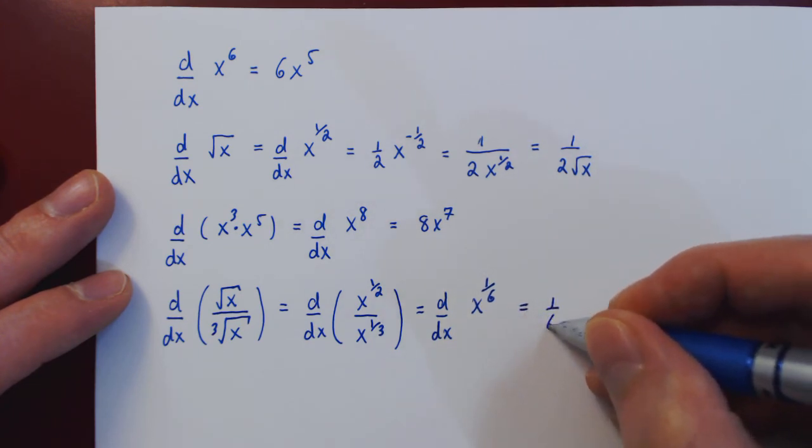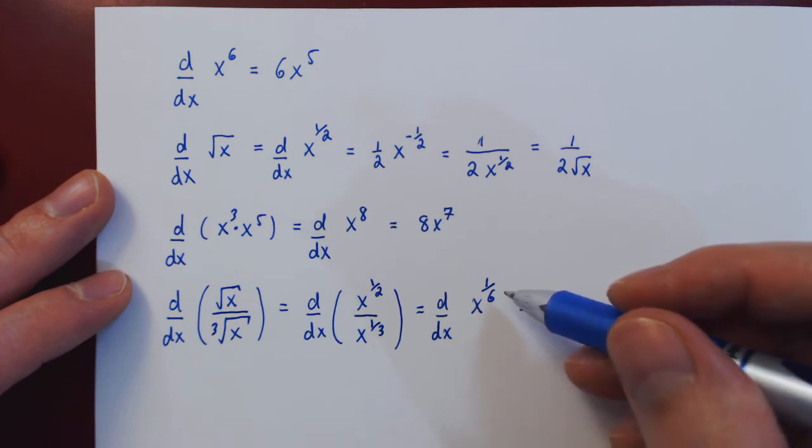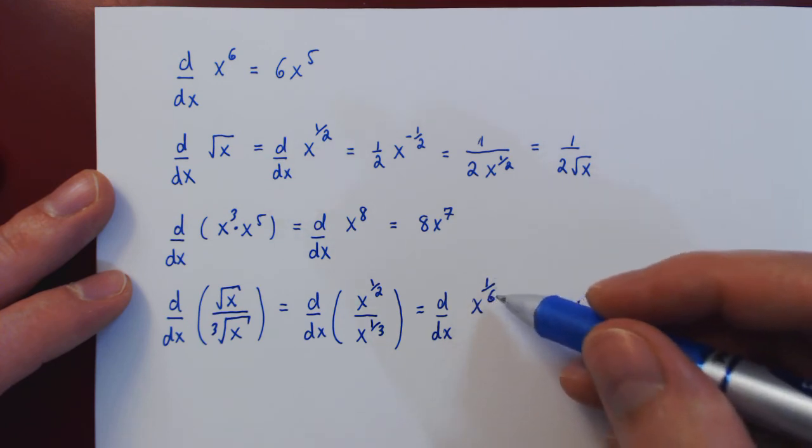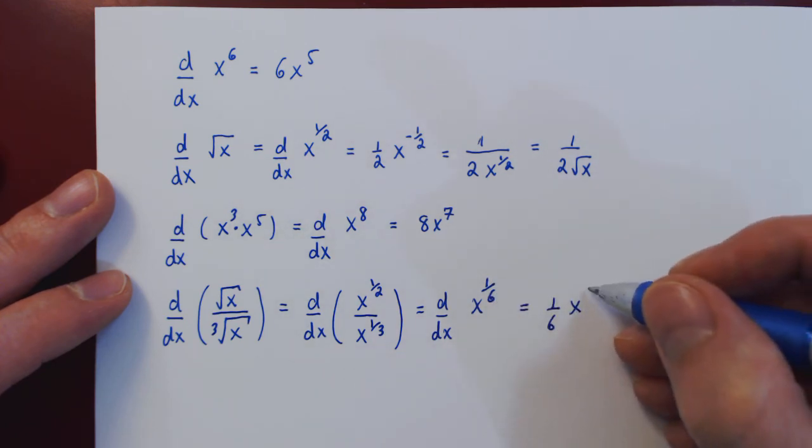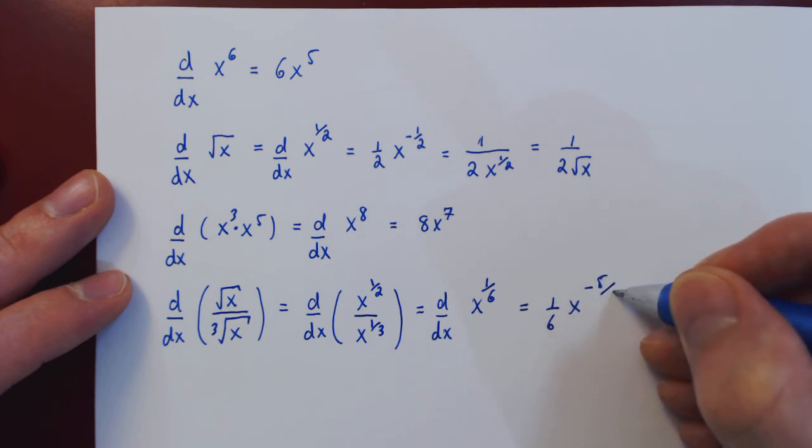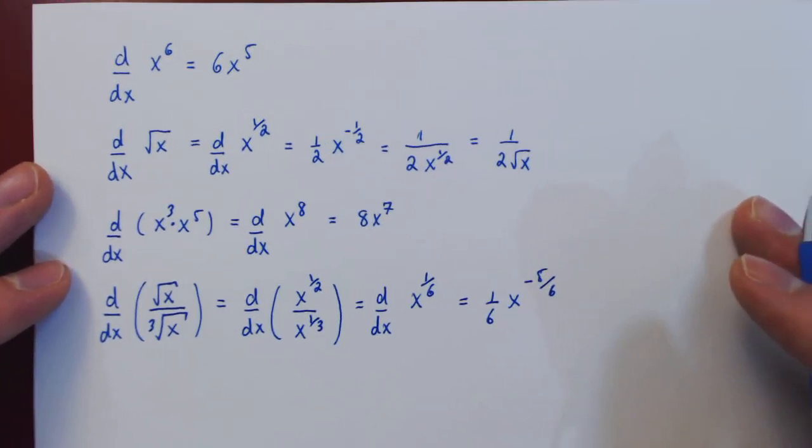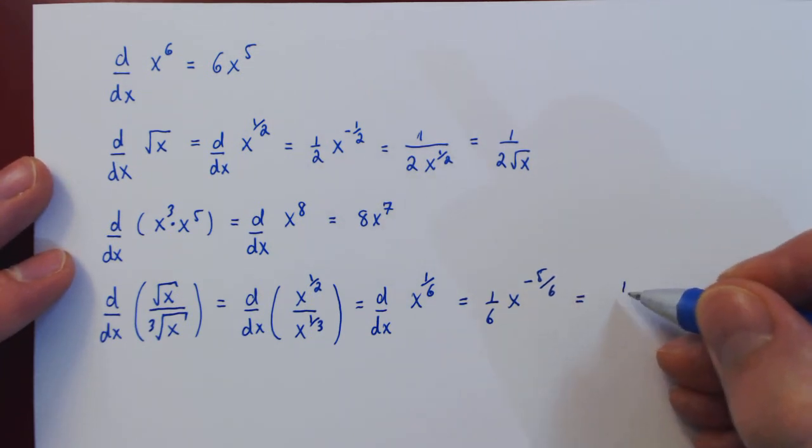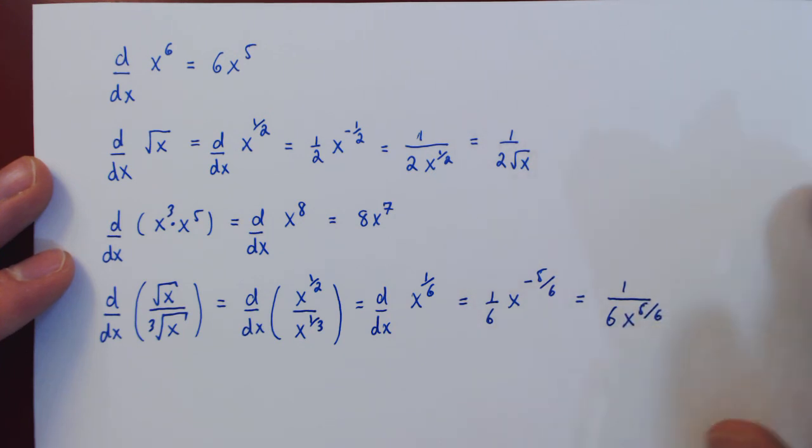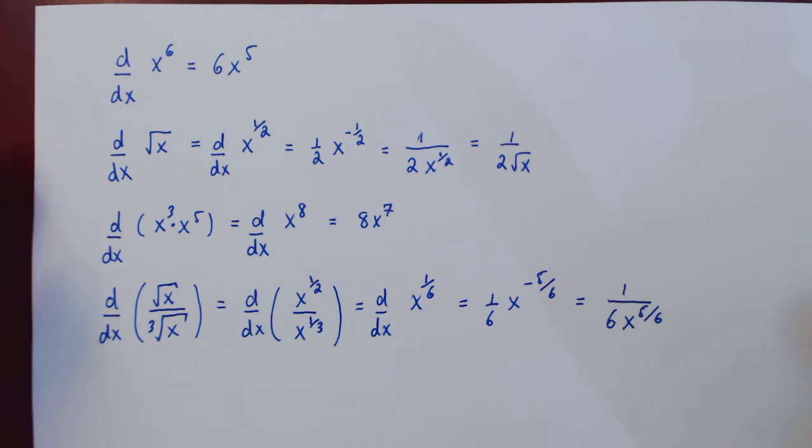Bring down the exponent, and subtract 1 to the original exponent, 1 over 6 minus 1 is negative 5 over 6. And again, if you wanted to, in the end, have a positive exponent, simply send x down to the denominator, and it becomes x to the positive 5 over 6. And that's it.